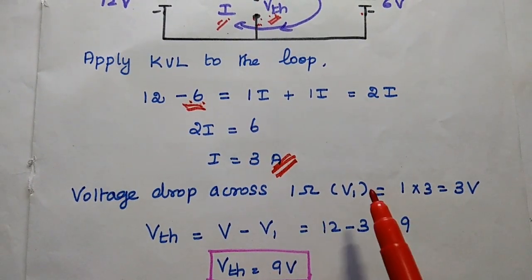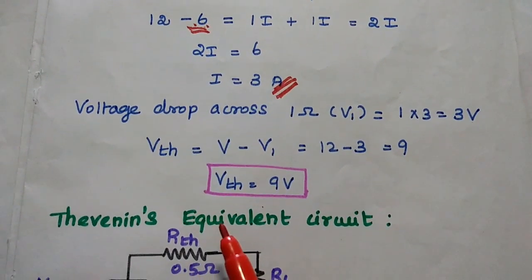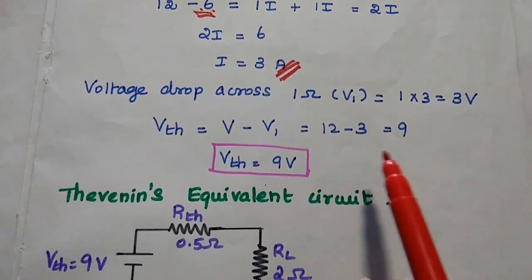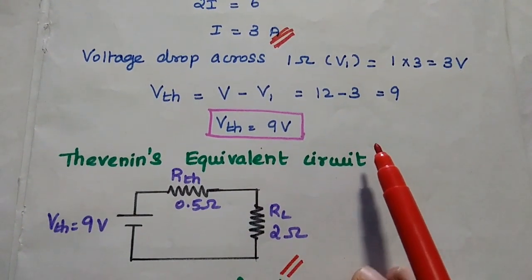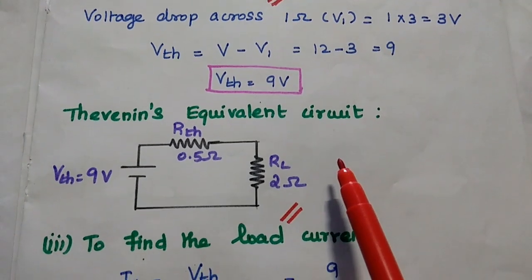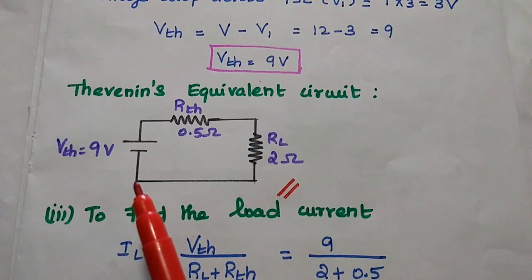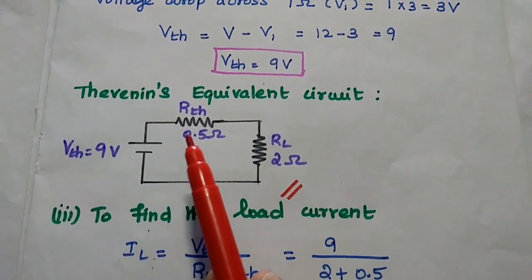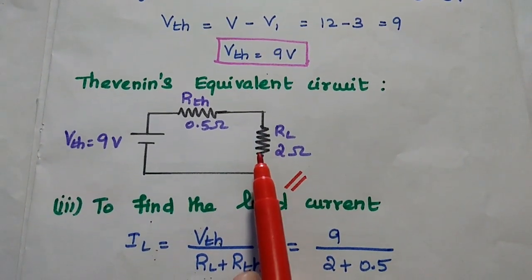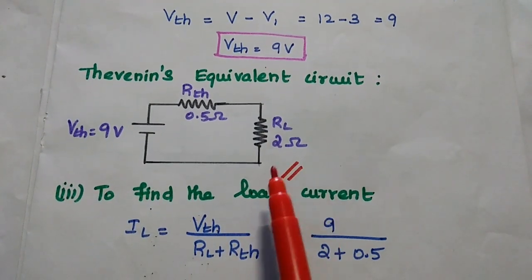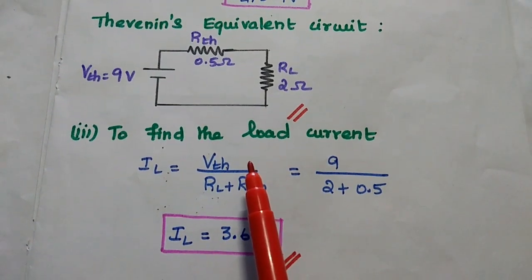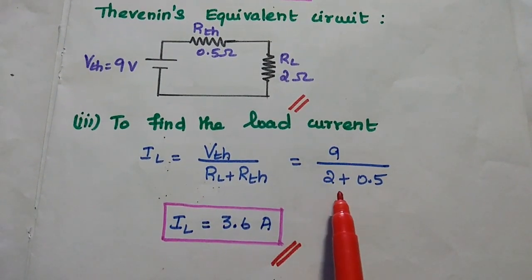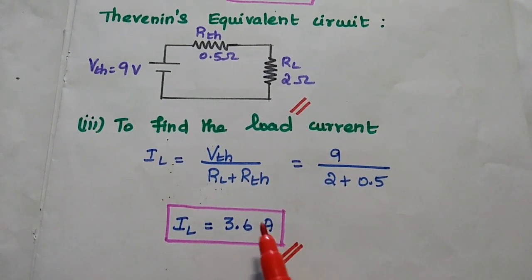The Thevenin's voltage equals the total voltage minus the voltage drop across the 1 ohm resistor: Vth = 12 − 3 = 9 V. The Thevenin's equivalent circuit has Vth = 9 V in series with Rth = 0.5 ohm and load resistance RL = 2 ohm. The load current IL = Vth ÷ (Rth + RL) = 9 ÷ (0.5 + 2) = 9 ÷ 2.5 = 3.6 amperes.